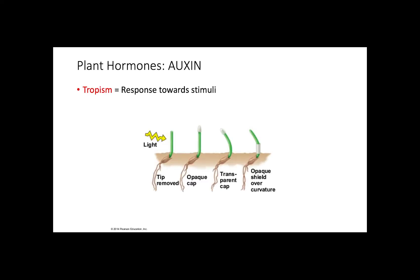The first and probably most famous plant hormone is indoleacetic acid, commonly known as auxin. This hormone is produced in apical meristems and young leaves. Auxin stimulates stem elongation, the formation of lateral roots, helps in developing fruits, and also functions in different tropism responses.